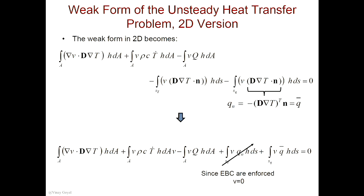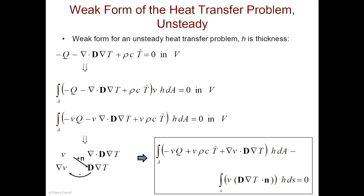All right, so let's look at the weak form for 2D. What I've done here is rewritten the expression but broken the boundary term into two terms. This boundary term at the bottom right comprises the whole boundary. But don't you agree I can break up the boundary into two parts — one where I apply the essential boundary conditions, and the other part where I apply the natural boundary conditions? Yes, I can break up an integral that way.